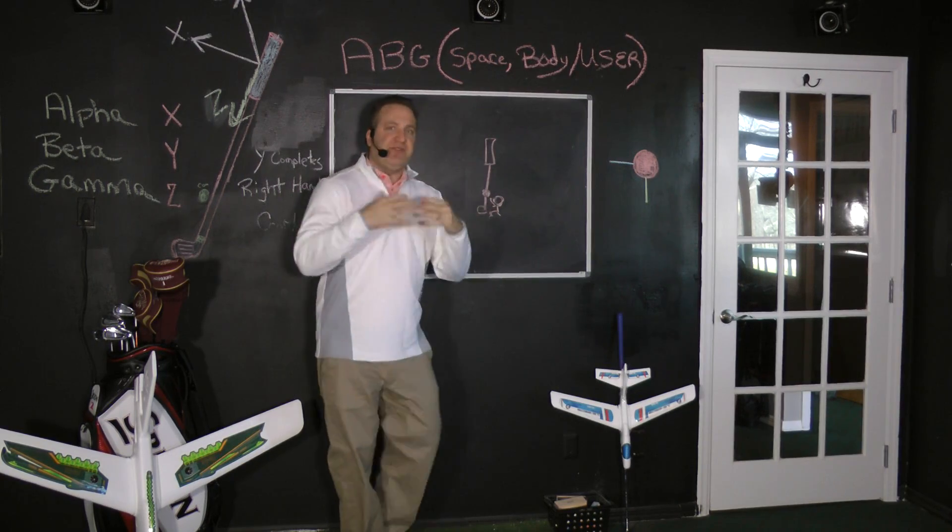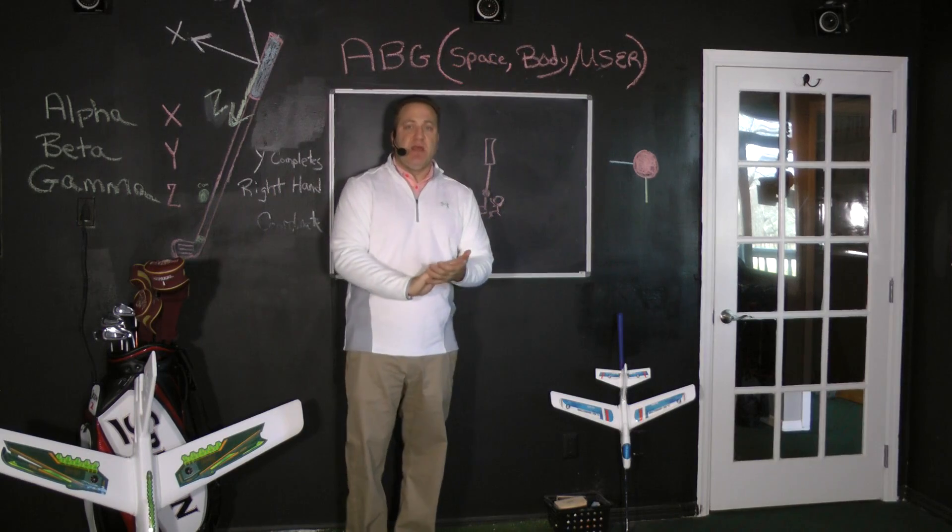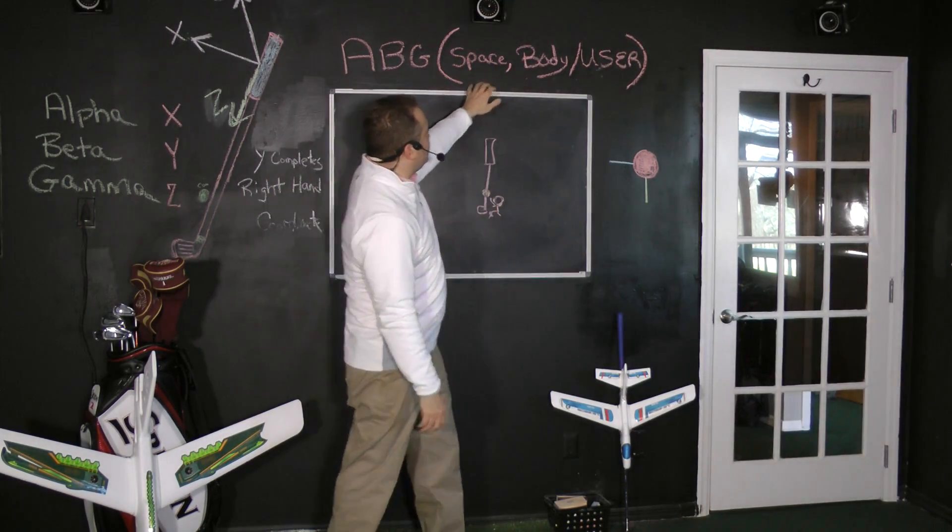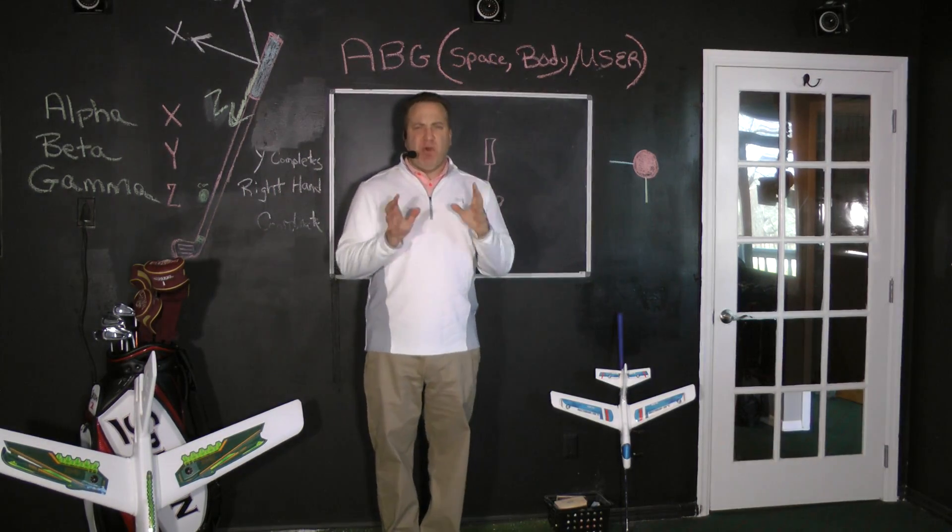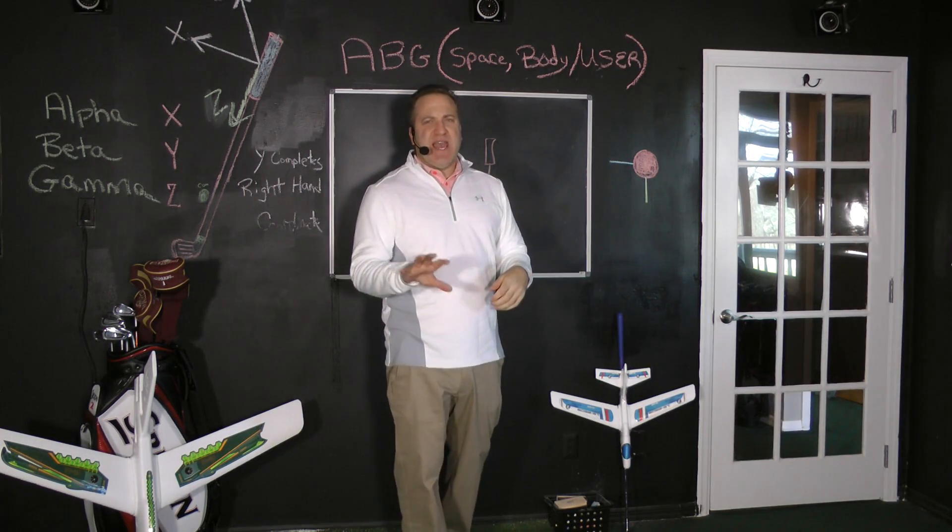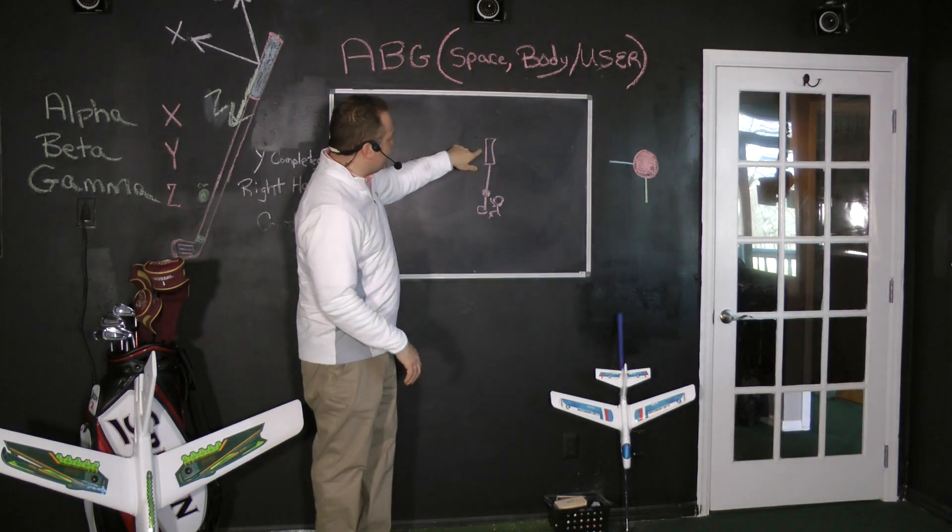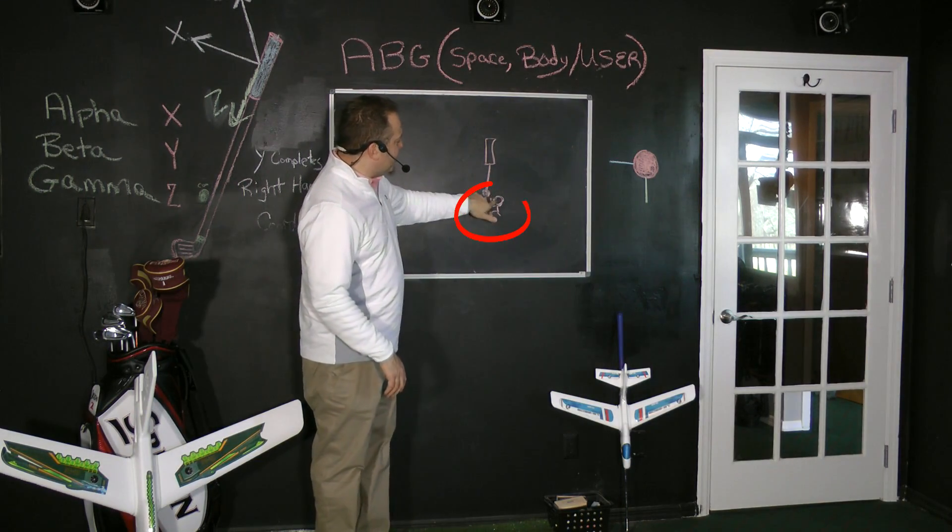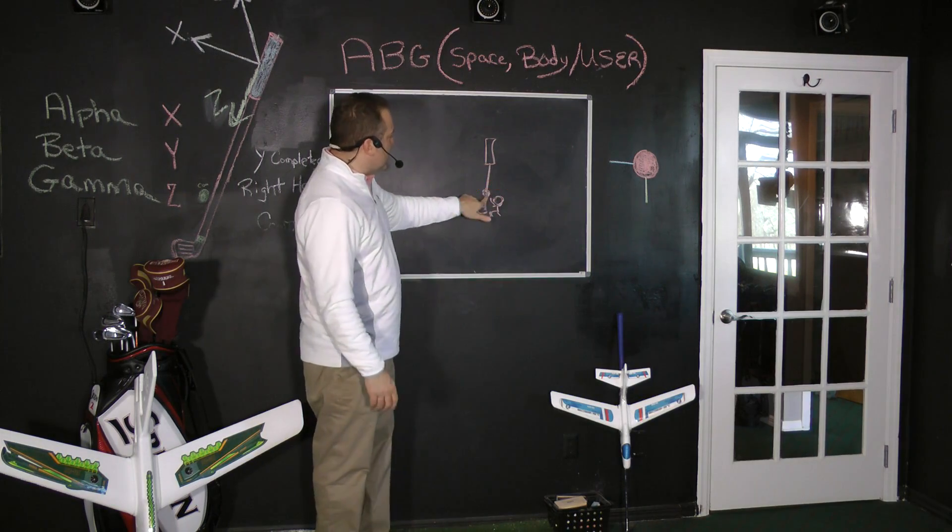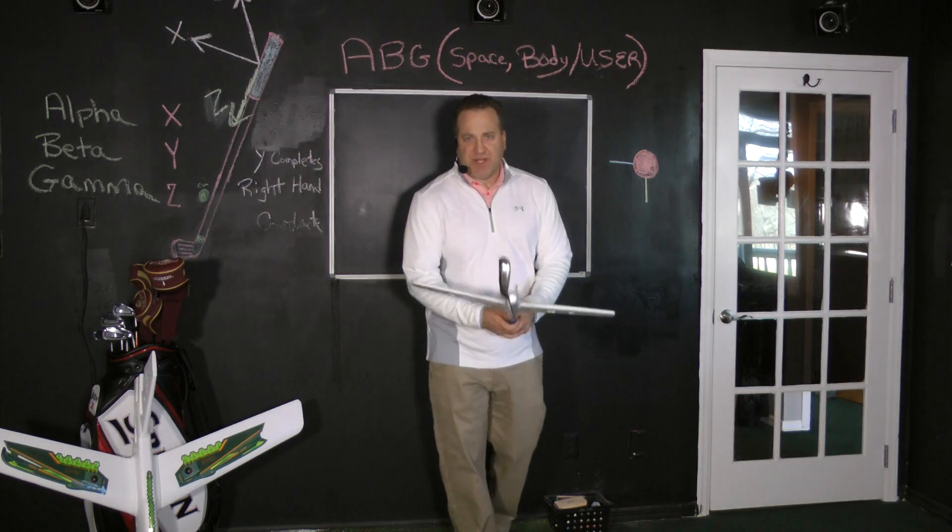One of the big things and questions that have popped up is the difference between the space and the user frame, and both are extremely necessary. So what I want you to envision here is here's a golf club with a little person sitting right here, best I could draw, and we choose the general position of impact, which I explained in the book.